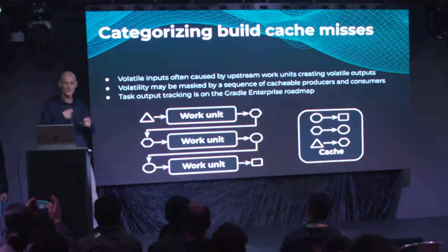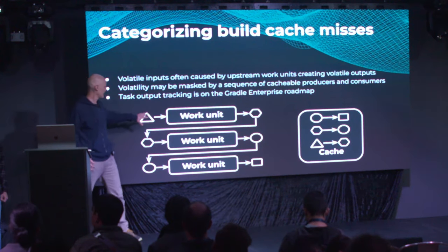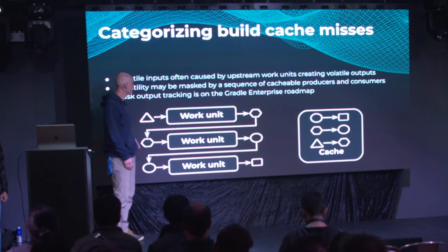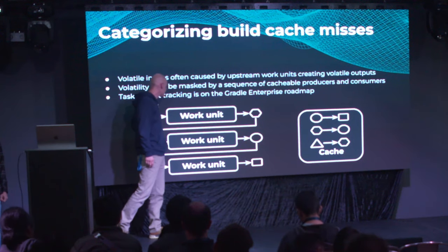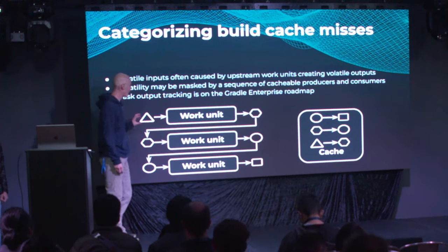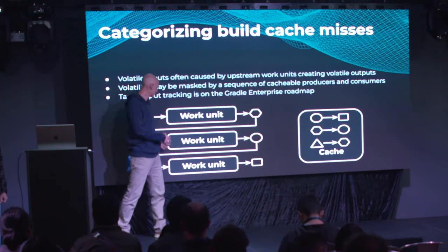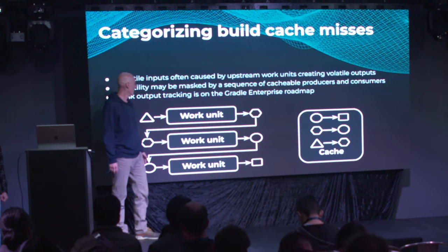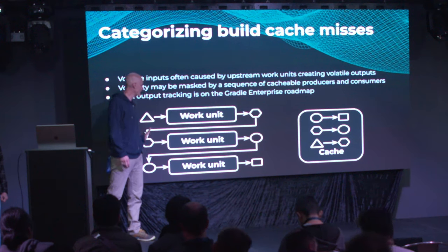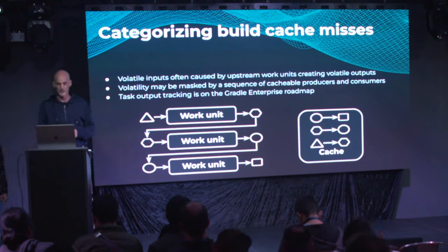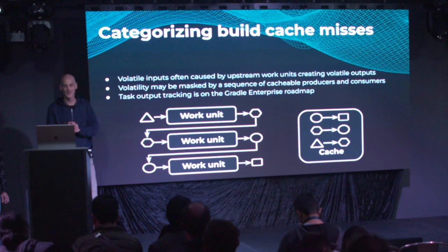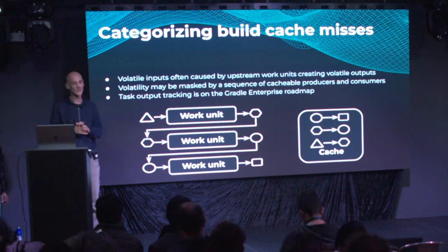Also interesting: volatile outputs from code generation can be masked when you use build caching. If the inputs are the same the second time you run it, it will not regenerate that volatile output — it'll just take it from the cache. But the moment you make a change, even if it doesn't affect the output, you'll see cache invalidation across all these tasks. So task output tracking would also be valuable, though even task input tracking gets us quite far.